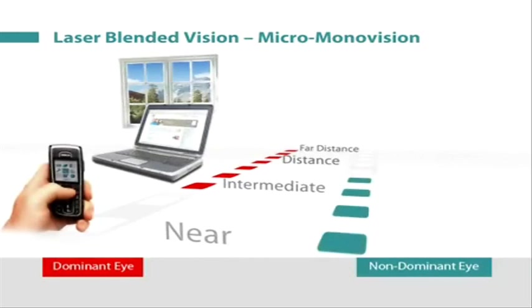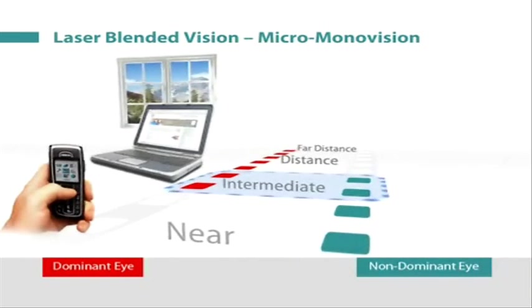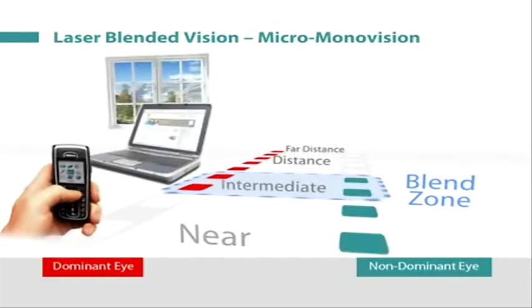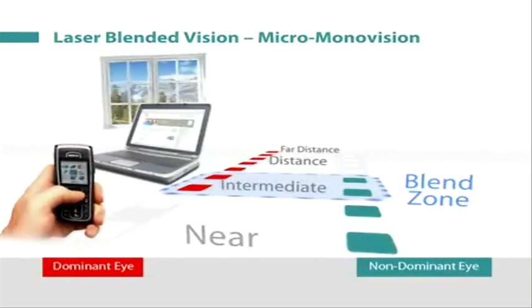The increased depth of field in each eye means that there is a region where the range of clear vision overlaps, known as the blend zone.